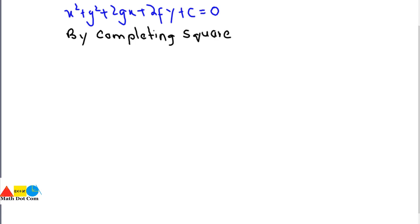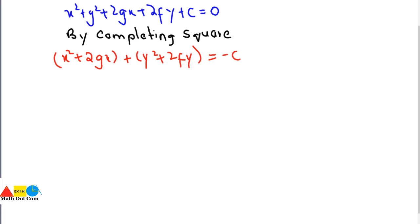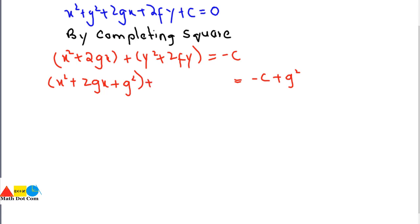By completing the square, we rearrange as x² + 2gx combined with y² + 2fy, moving c to the other side. To complete the square, we add g² to the x-group and add g² on the other side as well, because if you add something on one side you must do the same on the other side to preserve the equation.